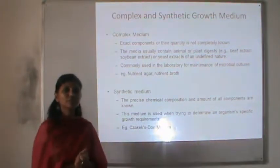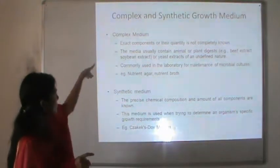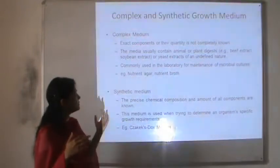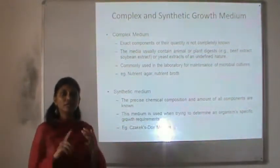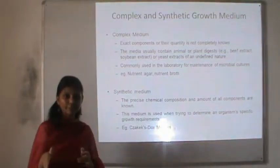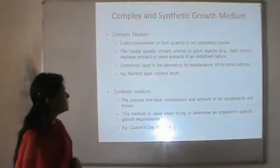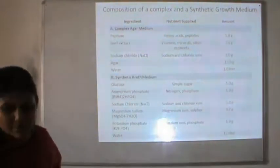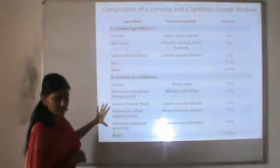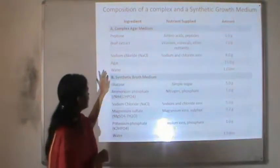Based upon the composition of the nutritional medium, there are two major types of growth medium: complex medium and synthetic medium. Complex medium is also known as chemically undefined media because the exact composition of the medium is not known, whereas in the case of synthetic medium or chemically defined medium the exact composition is known. This can be understood better from the next chart — this is an example of a complex agar medium and this is the composition of a synthetic growth medium. In the complex agar medium there is peptone, beef extract, sodium chloride, agar, and water.